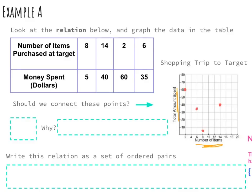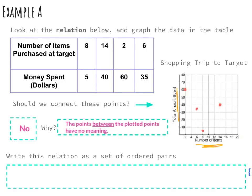Now that we've got our points on the graph, should we connect these dots? The answer is no. The reason is the points between the plotted points really have no meaning. That's the difference between a discrete graph — where we don't connect the points — and a continuous graph, which is connected via a line or some other shape. This is a discrete graph because when you go to Target, depending on what you buy and how many items you buy, it changes the price. So the points in the middle don't matter.